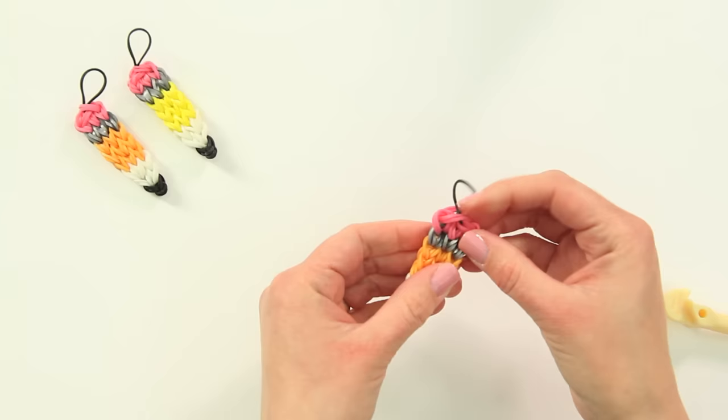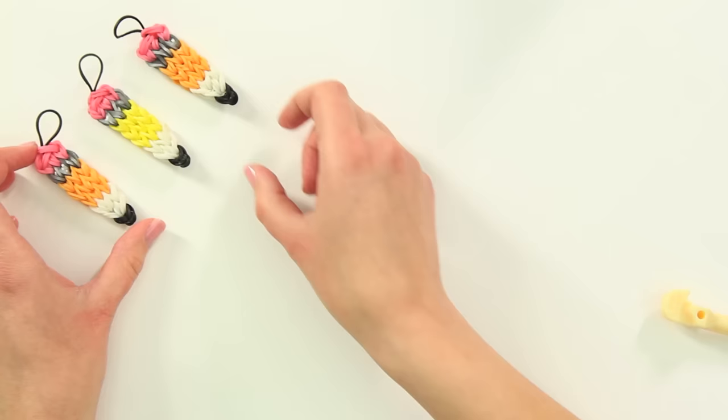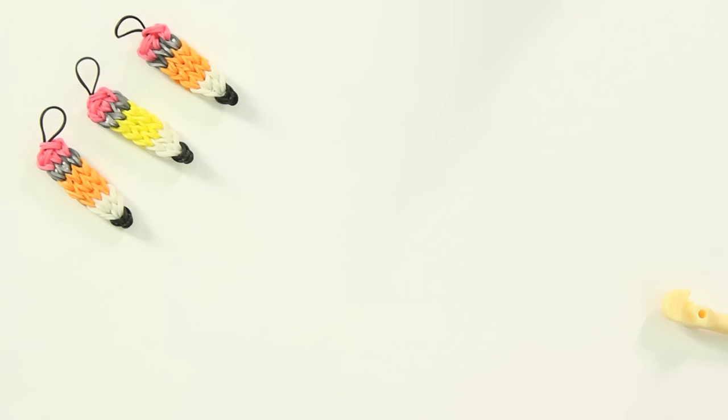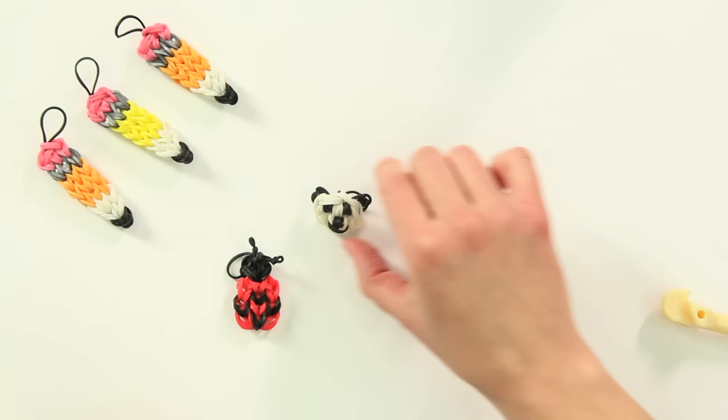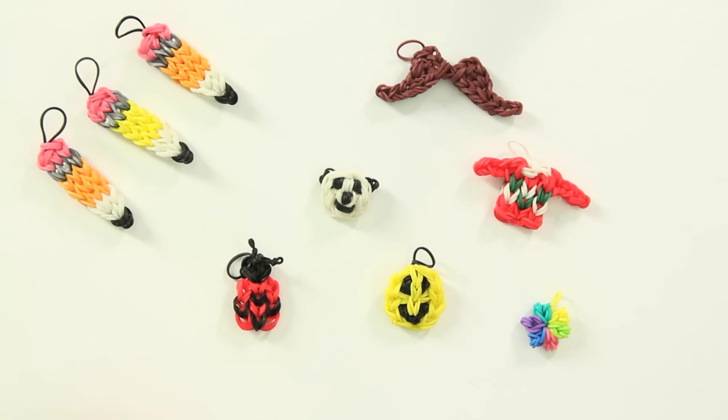I hope you enjoyed making a pencil charm with me today. If you did, please consider subscribing. It's the best way to tell me to keep on doing what I'm doing. I'd also like you to consider watching some of my other videos. I've got ladybug. I've got a panda face. Smiley face. We've got the ugly sweater charm. We've got flowers. We've got mustaches. There's plenty of fun projects to try next. Thank you again for watching. If you'd like to stay informed, in addition to subscribing, please consider adding yourself to my mailing list. There's a link below for that in the description as well.